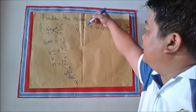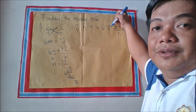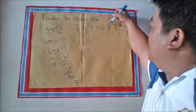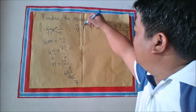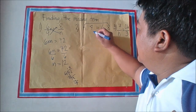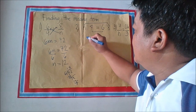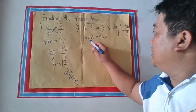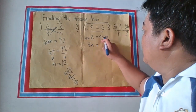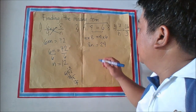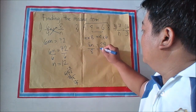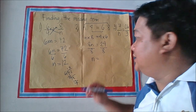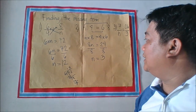Next example: n is to four is equal to six is to eight. The first term is missing. The product of the extremes: n times eight equals eight n. The product of the means: four times six equals 24. So 8n equals 24. Dividing both sides by eight gives n equals three.